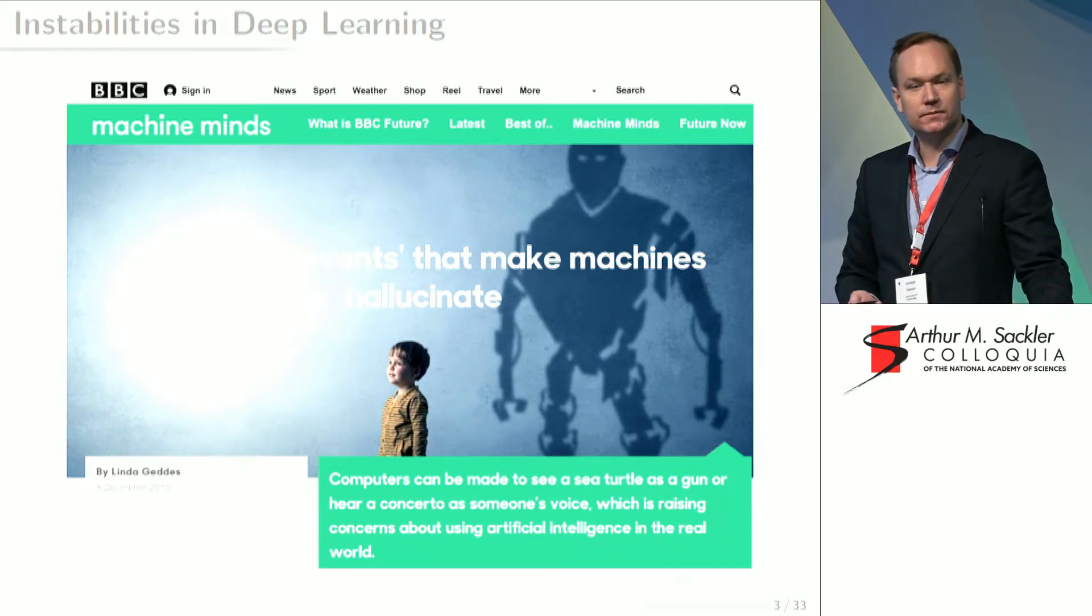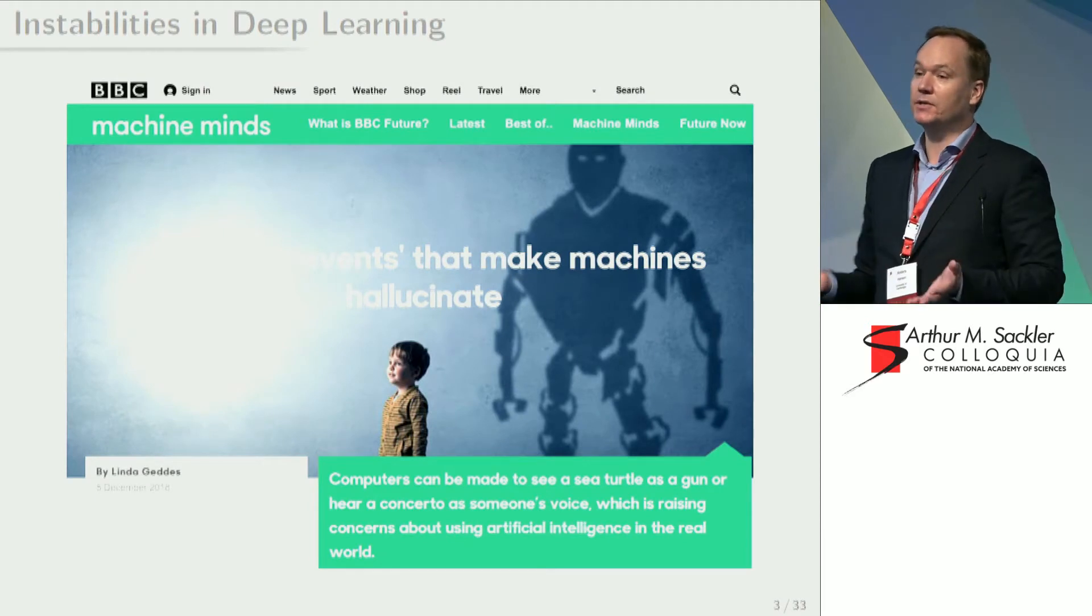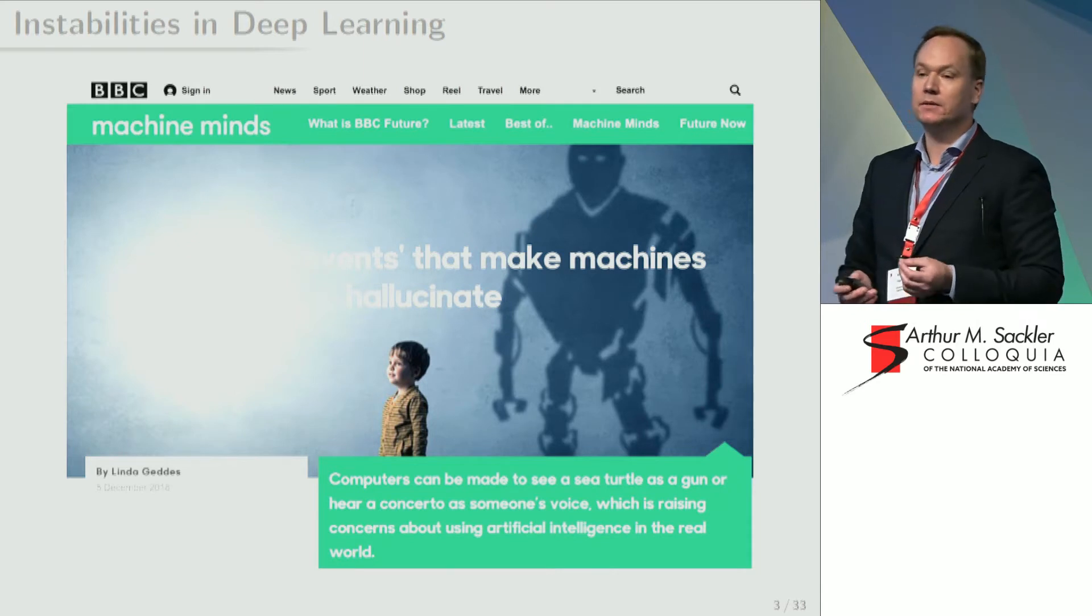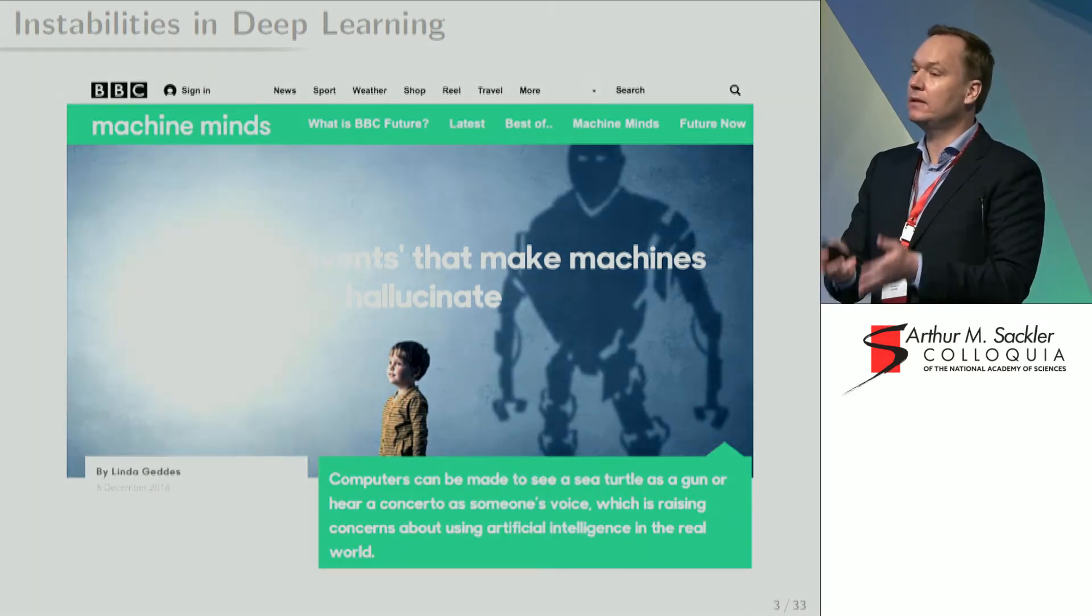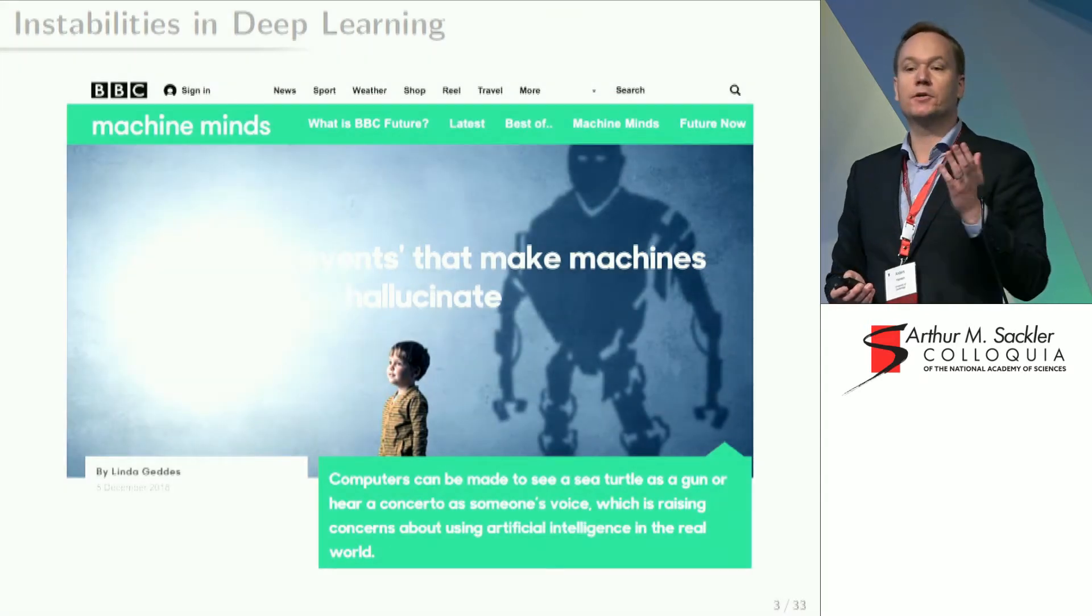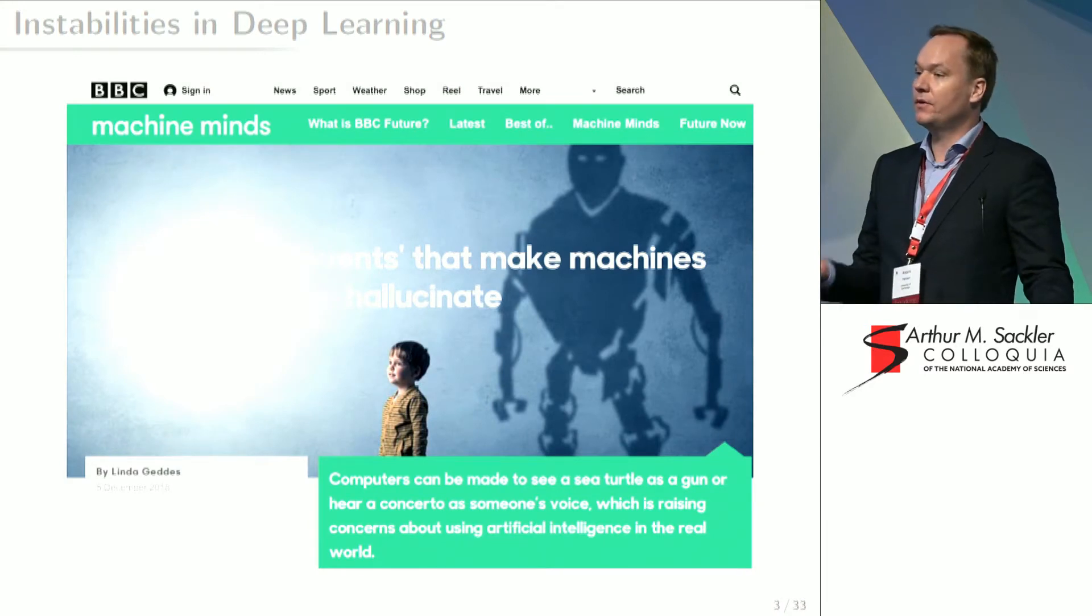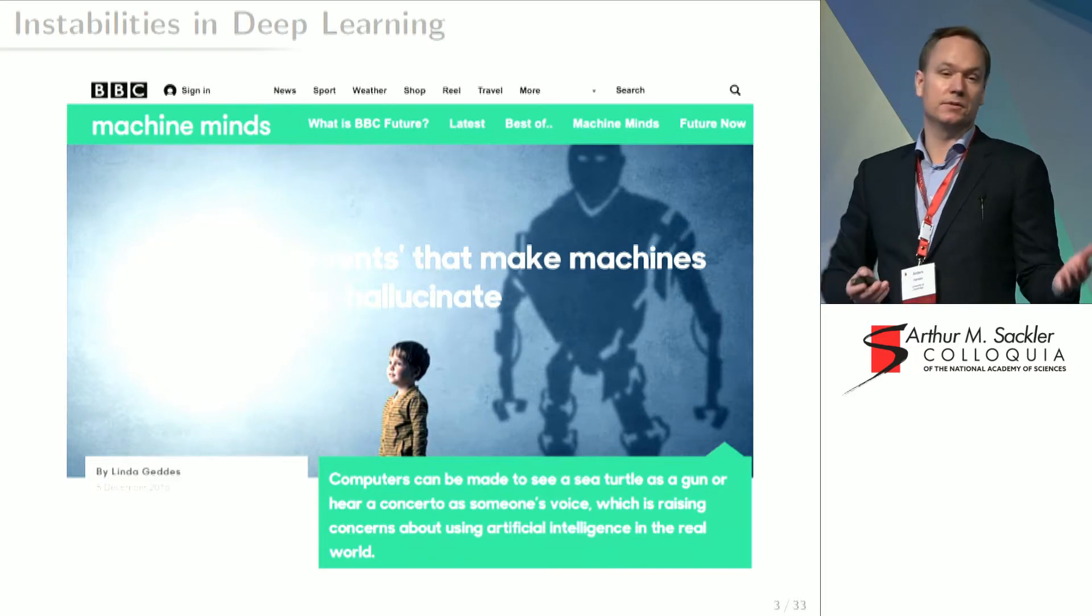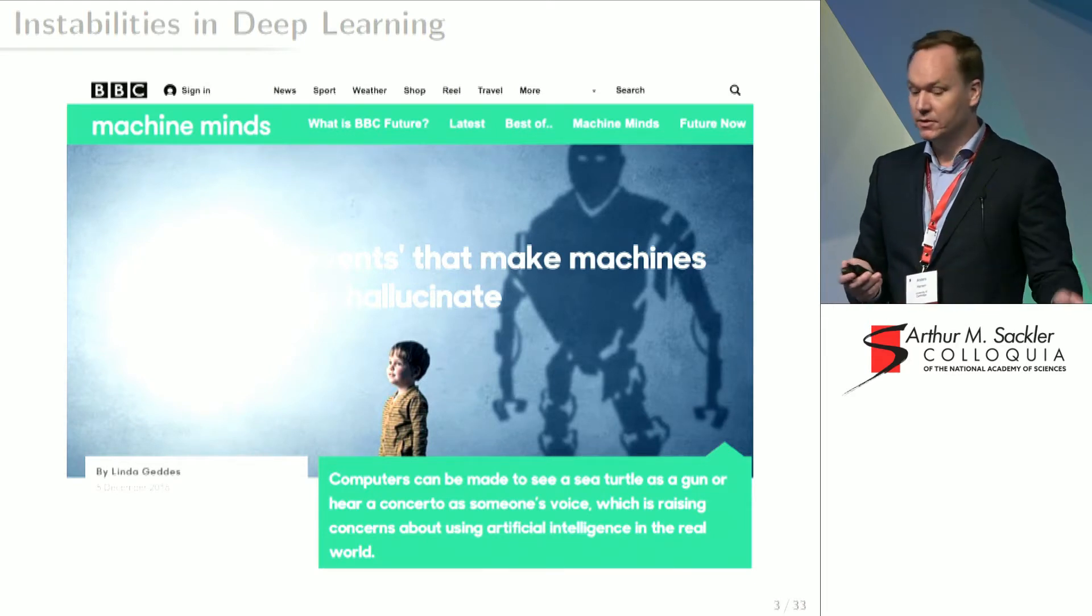And the concern is as follows. Take any successful neural net that can do image classification, that can recognize, for example, a cat. You can take a tiny little perturbation that is so small that you cannot see it with the human eye, and then suddenly the neural net is going to say that this is a fire truck or a whale or something completely nonsensical. This phenomenon happens not just in image classification. It happens in voice recognition, automatic diagnosis in medicine, et cetera. And this is, of course, of concern.